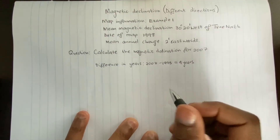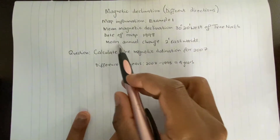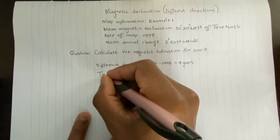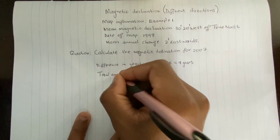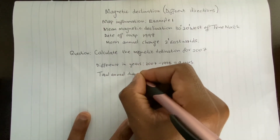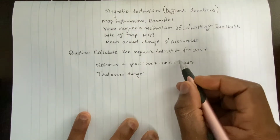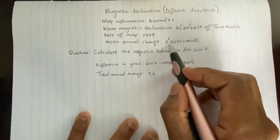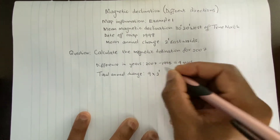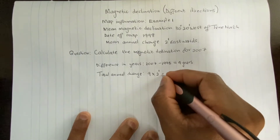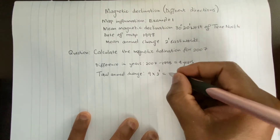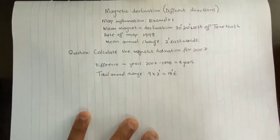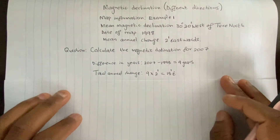The second step is to calculate the total annual change. I have a mean annual change of 2 minutes eastwards, so the total annual change equals 9 years multiplied by 2 minutes eastwards, which gives 18 minutes eastwards.